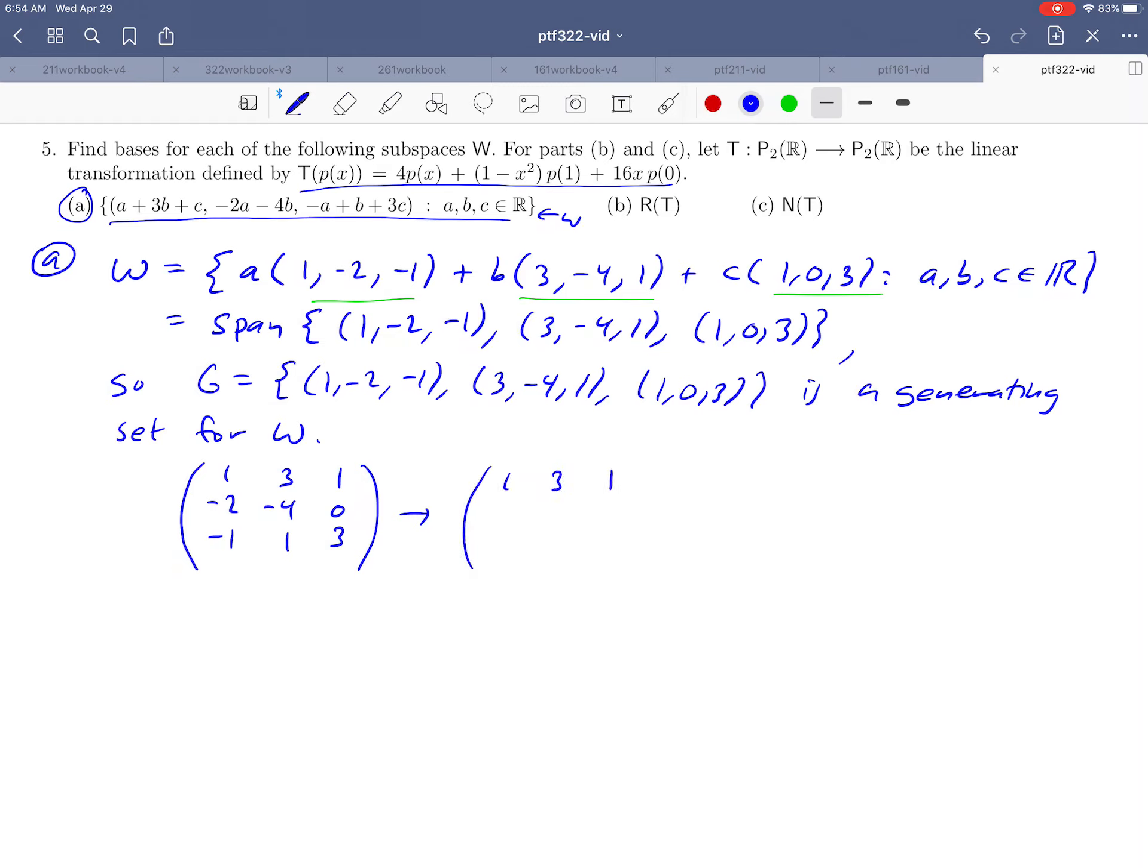So if you do row operations on this, let's just work through it. If you took two times the first row and added it to the second row you would get (0, 2, 2). And then if you add the first and the third row you're going to get (0, 4, 4). Notice that the second and the third row are multiples of each other.